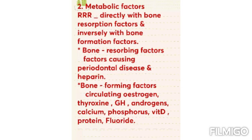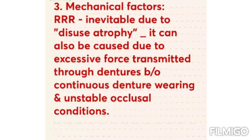The second factor is metabolic factors. RRR is directly proportional to bone resorption factors — if bone resorption factors increase, RRR increases. Bone resorbing factors include factors causing periodontal disease and heparin. RRR is inversely proportional to bone forming factors, which include circulating estrogen, thyroxine, growth hormone, androgens, vitamin D, calcium, phosphorus, protein, and fluoride.